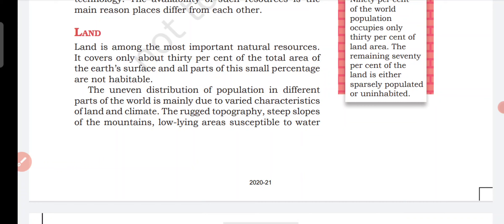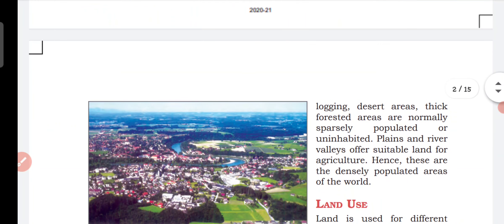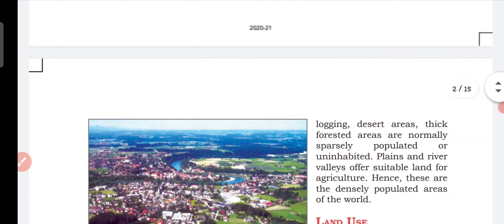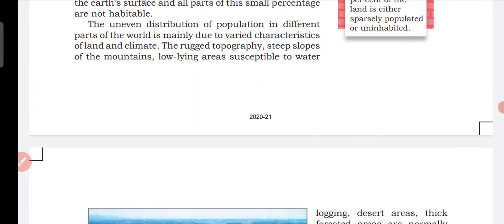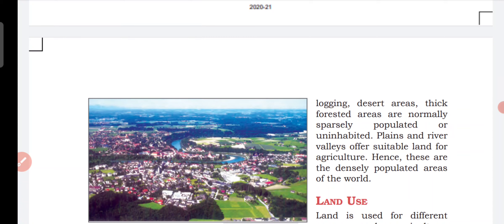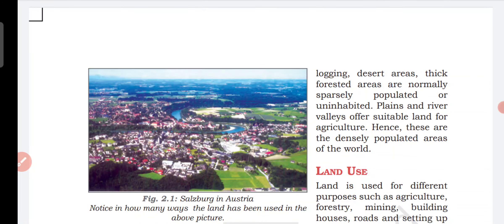The rugged topography, steep slopes of mountains, low-lying areas susceptible to water-logging, desert areas, and thick forested areas are normally sparsely populated or uninhabited. Desert areas, swampy areas, forest areas, and mountain areas are often less populated. Plains and river valleys offer suitable land for agriculture.